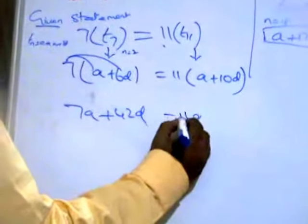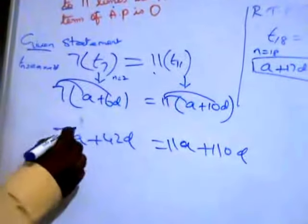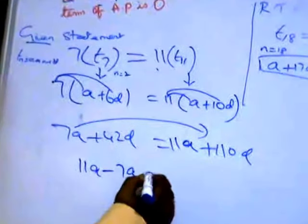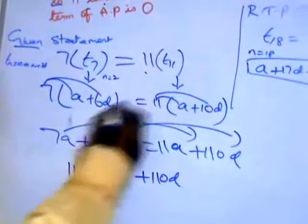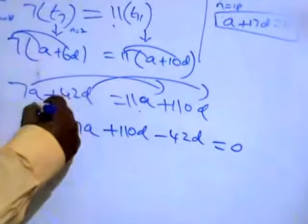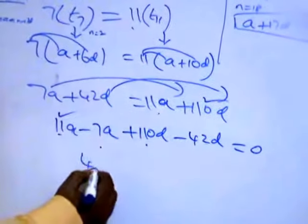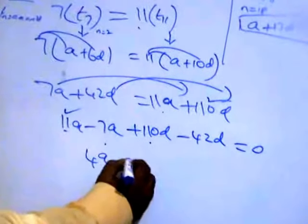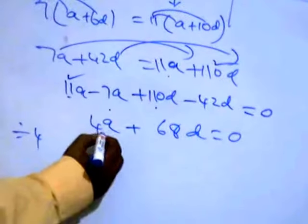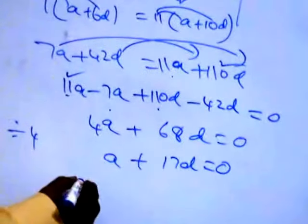Now take everything to one side. You get 11a minus 7a, then 110d minus 42d, equal to 0. That gives 4a plus 68d equals 0. Divide by 4: you get a plus 17d equals 0. That is exactly what you had to prove — hence proved. It is a very simple sum.